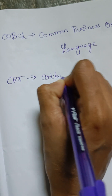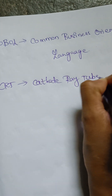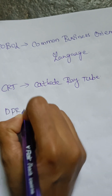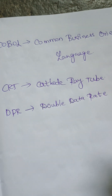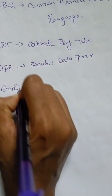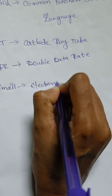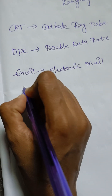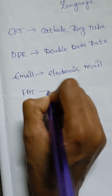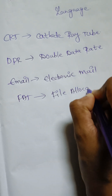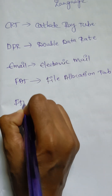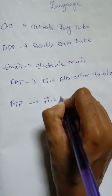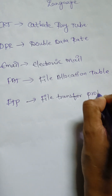CRT — cathode ray tube. DDR — double data rate. Email — electronic mail. Next one is FAT — file allocation table. FTP — file transfer protocol.